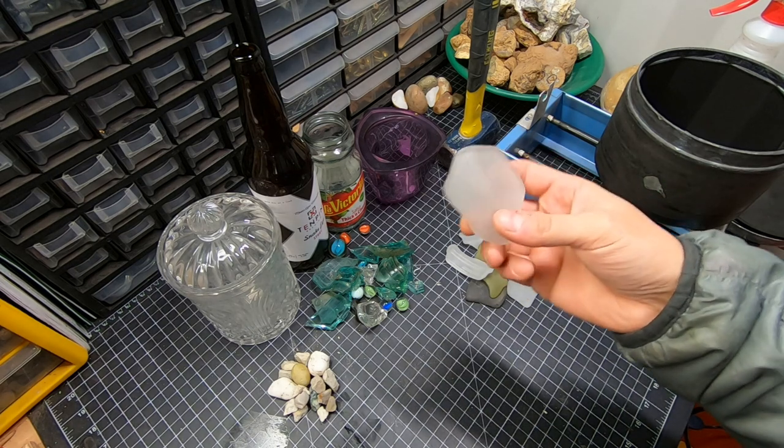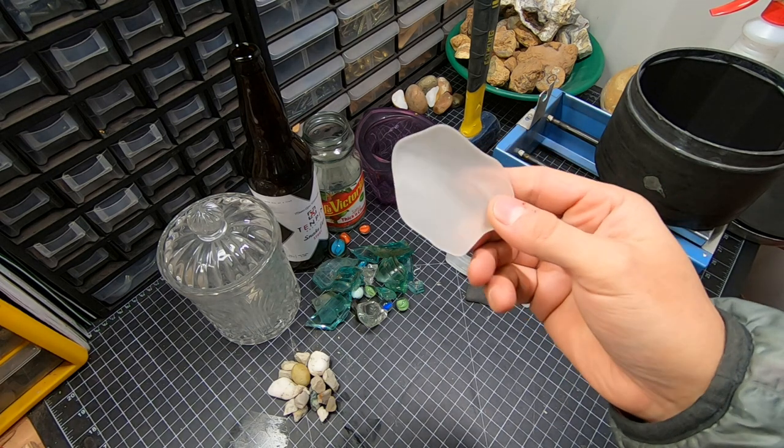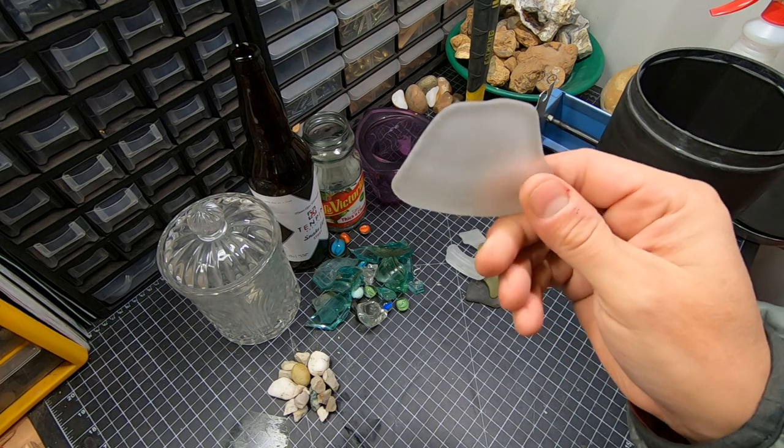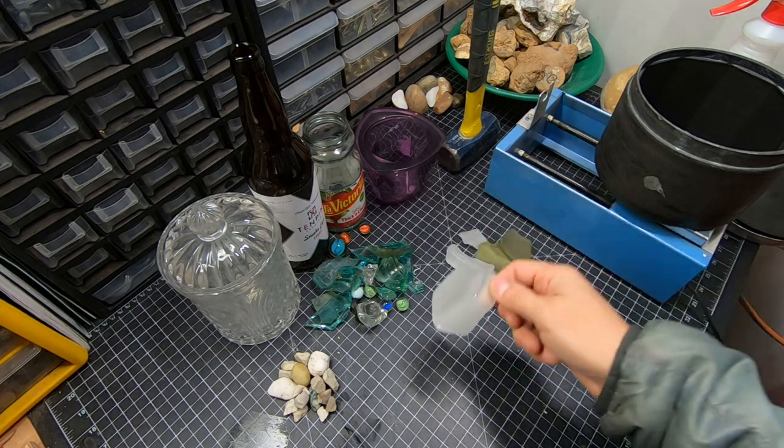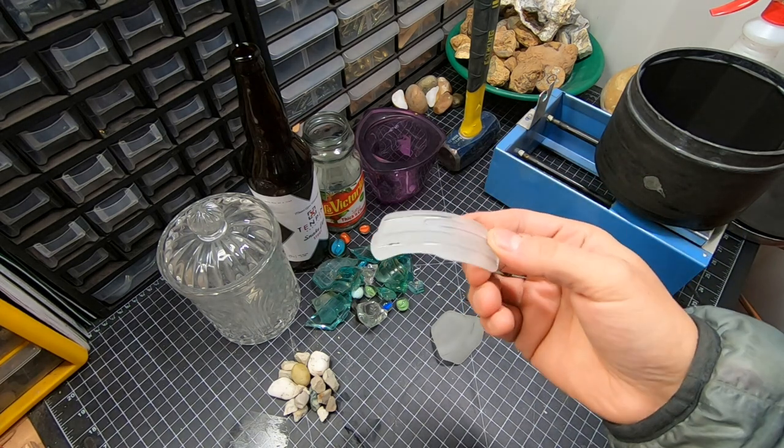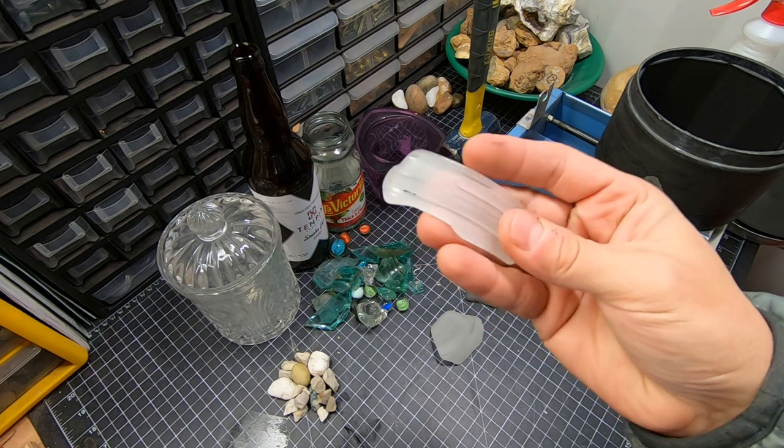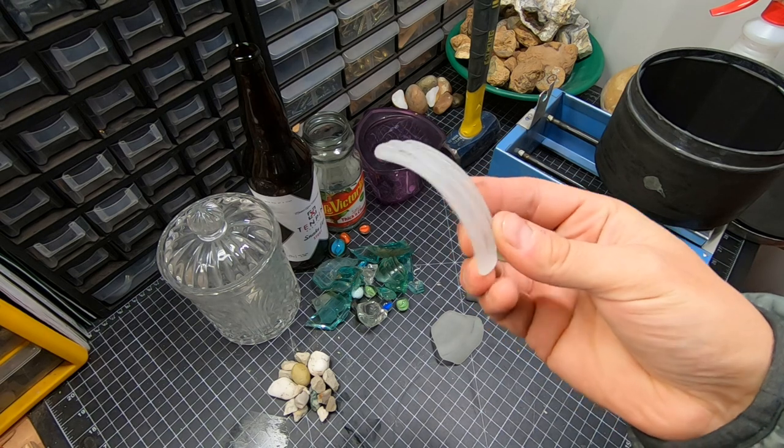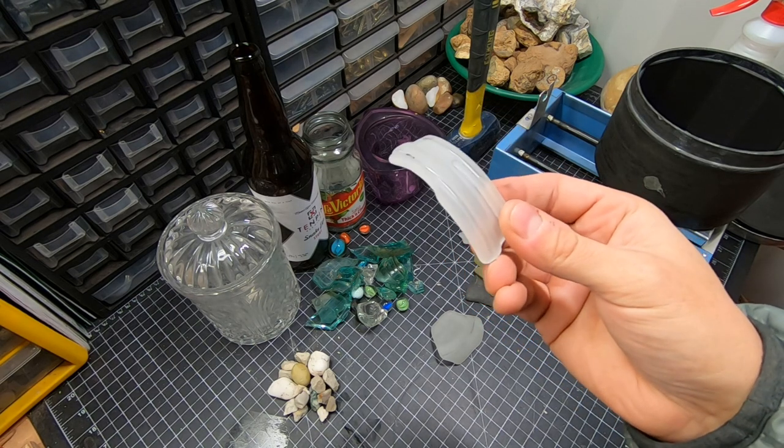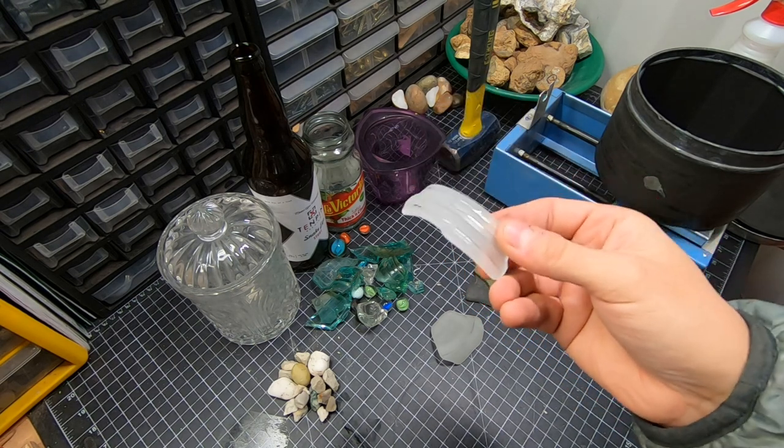So here's some sea glass that I made in my first attempt. Looks pretty good. It's kind of big, but if you found that out of the ocean you'd be pretty excited. I want to make some more realistic looking sea glass and tumble some more interesting things.